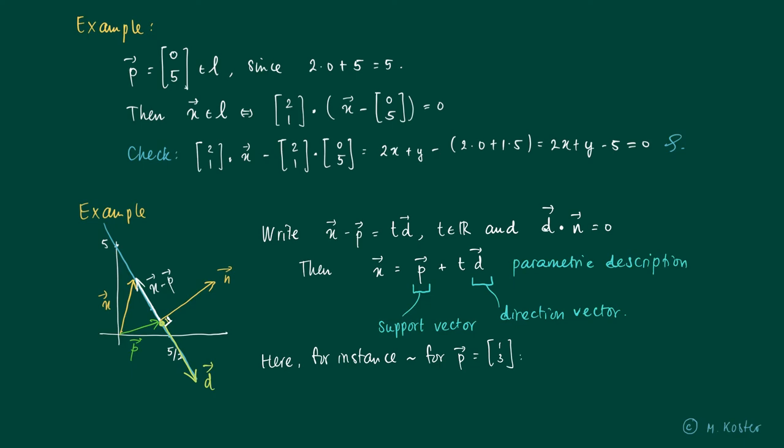then we get as a description for all elements on the line l, this particular p plus t times (1, -2), which is the direction vector of the line.